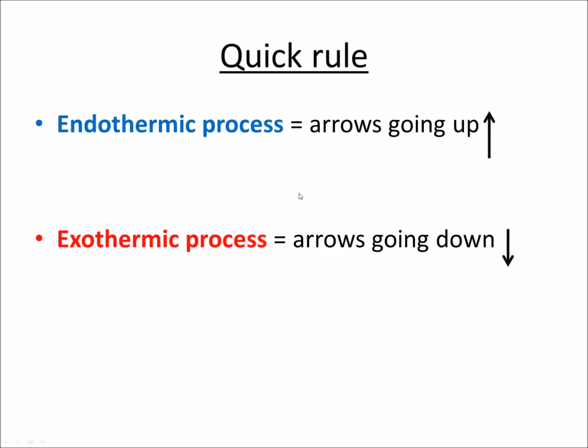Before I do that I want to bring your attention to this. In the Born-Haber cycle, any arrows going up is an endothermic process and any arrows going down is an exothermic process.